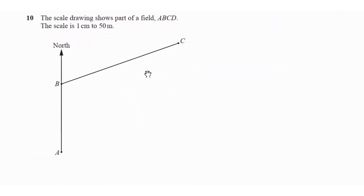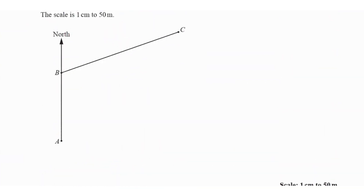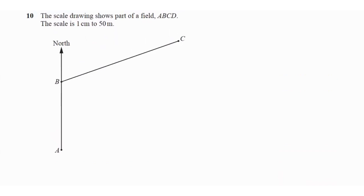Question 10: the scale drawing shows part of field ABCD. The scale is 1 centimetre to 50 metres. Measure the bearing of C from B — you'll use your protractor, place the centre at B, and measure the angle that line BC makes with the north line.